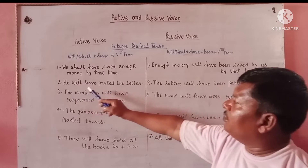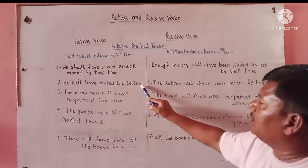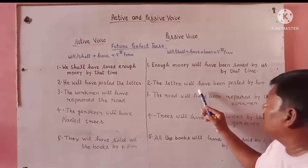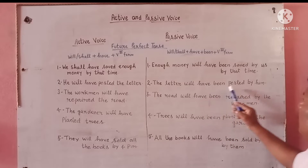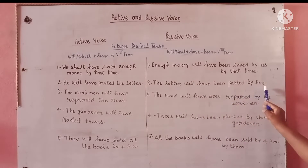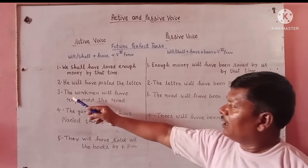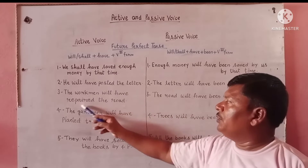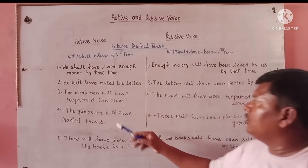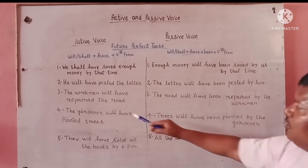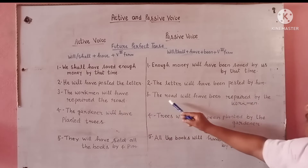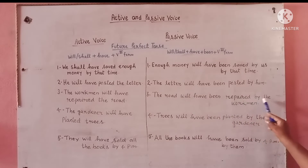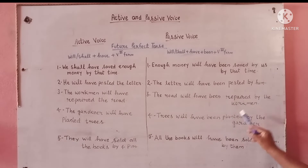Active: We will have posted the letter. Passive: The letter will have been posted by him. Active: The workman will have repaired the road. Passive: The road will have been repaired by the workman.